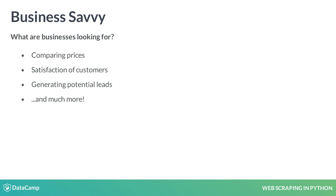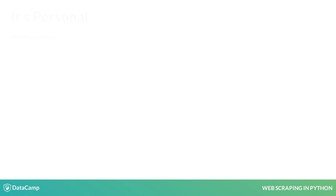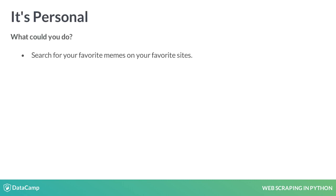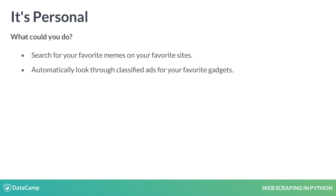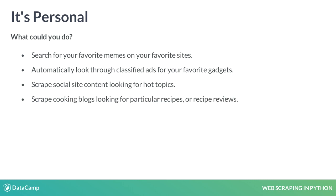And this is just a short list. We list here a few fun things you can do scraping the web. You could search for your favorite memes from your favorite sites. You can scour through classified ads looking for your favorite things. You can look for trending topics on social media sites. You could look for recipes you might be interested in on cooking blogs. In fact, there's a whole lot you can do.